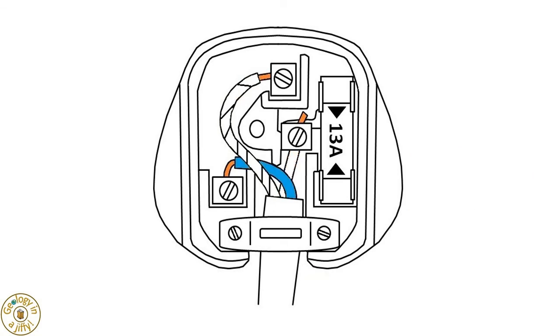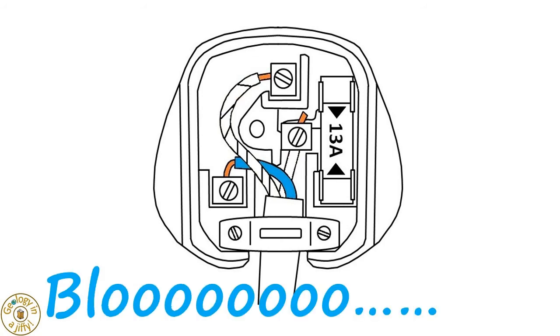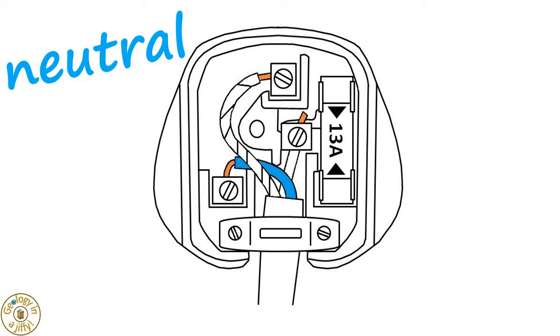The blue wire, or B for bottom and L for left, is blue because it is the neutral wire and completes the circuit from the appliance back to the main supply at 0 volts.